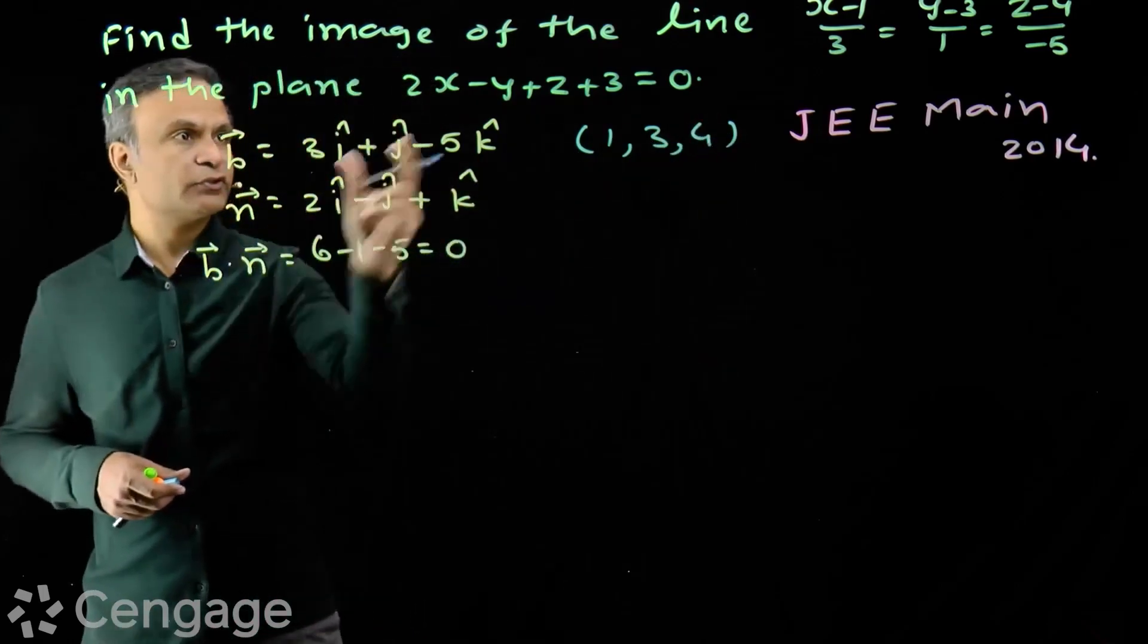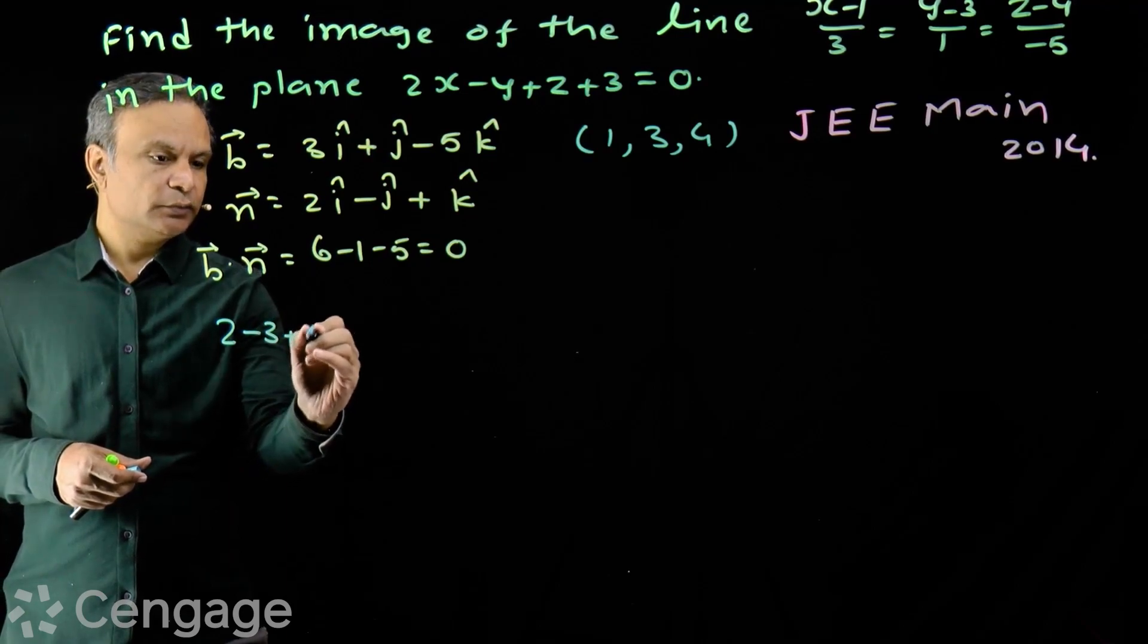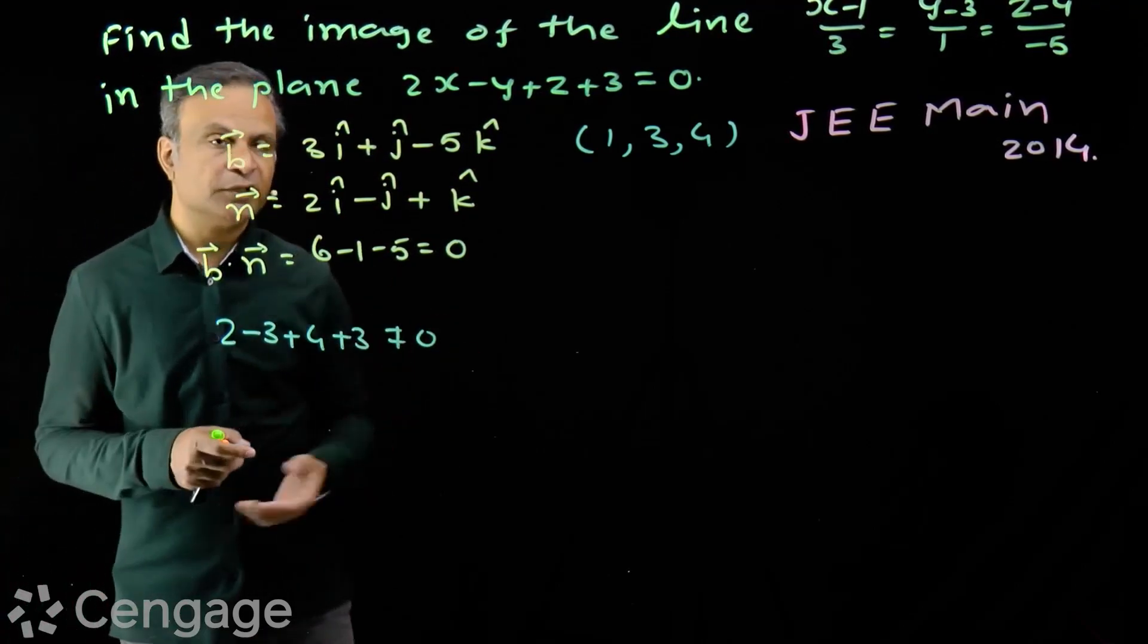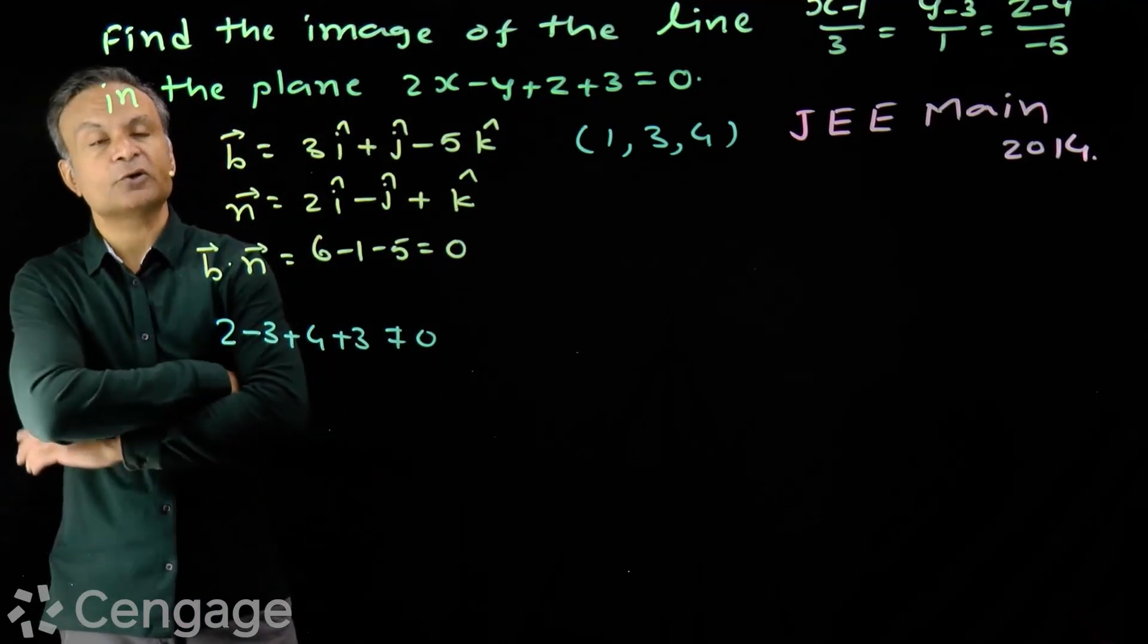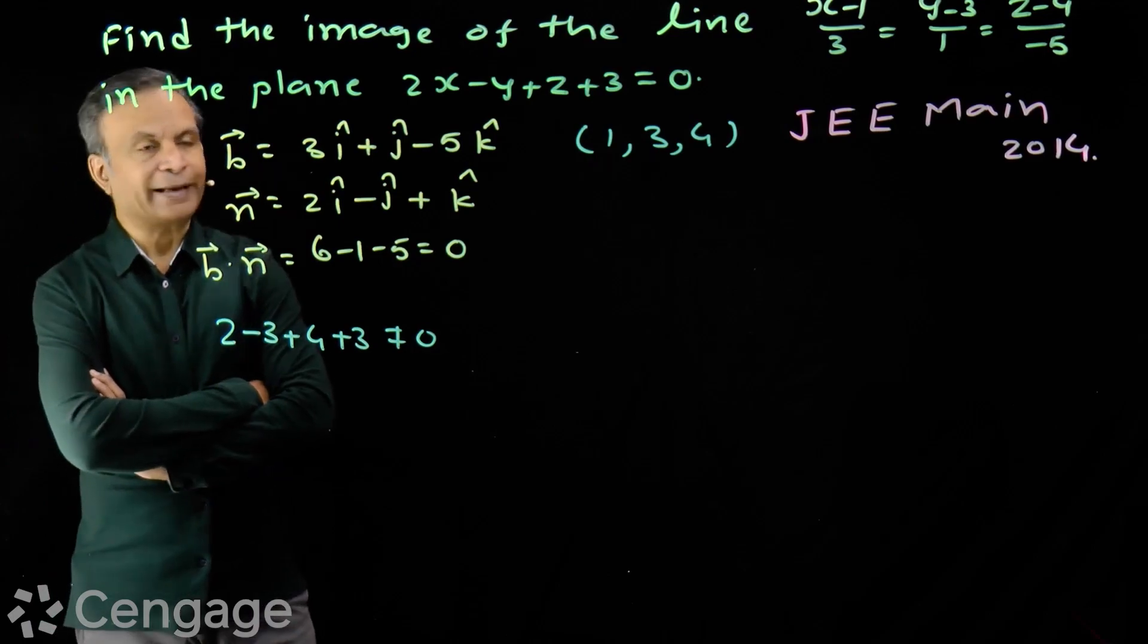We put this coordinate in the equation of plane. We get 2 minus 3 plus 4 plus 3. This is not equal to 0. So point line is not lying on the plane. So line is not lying on the plane. So line is parallel to the plane.